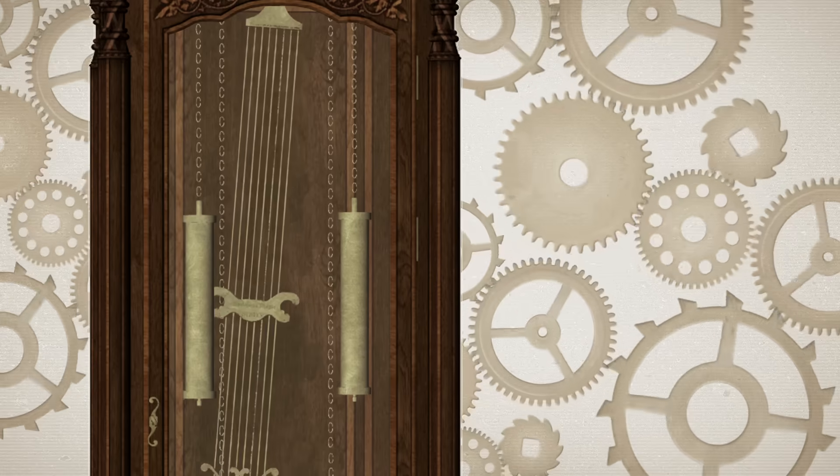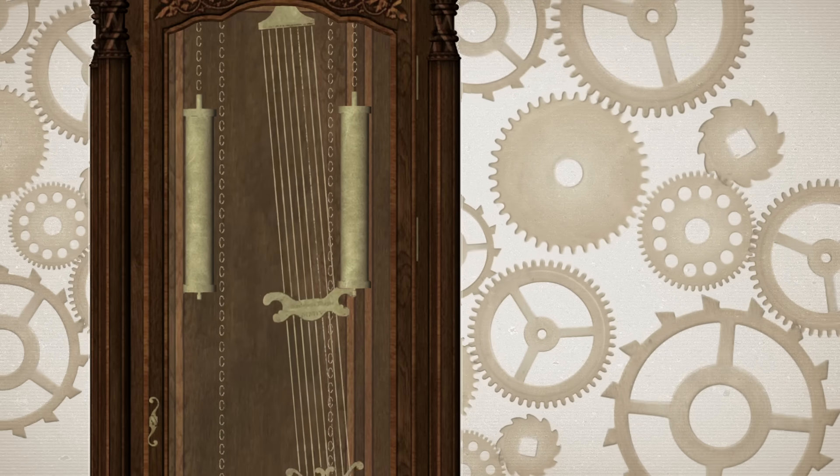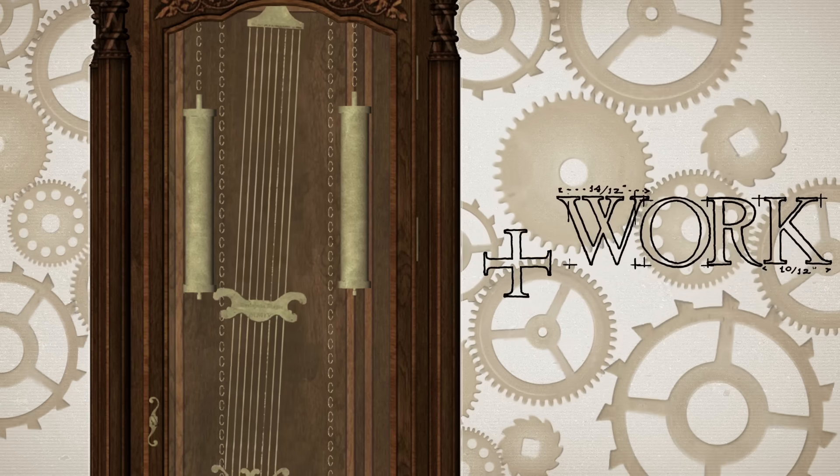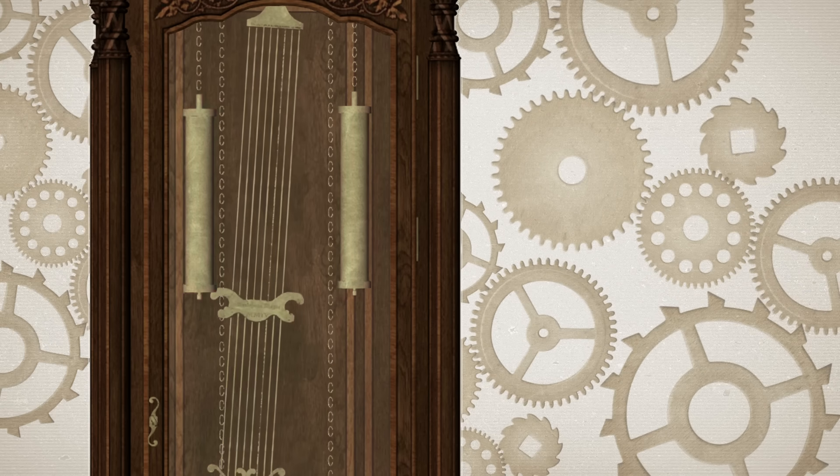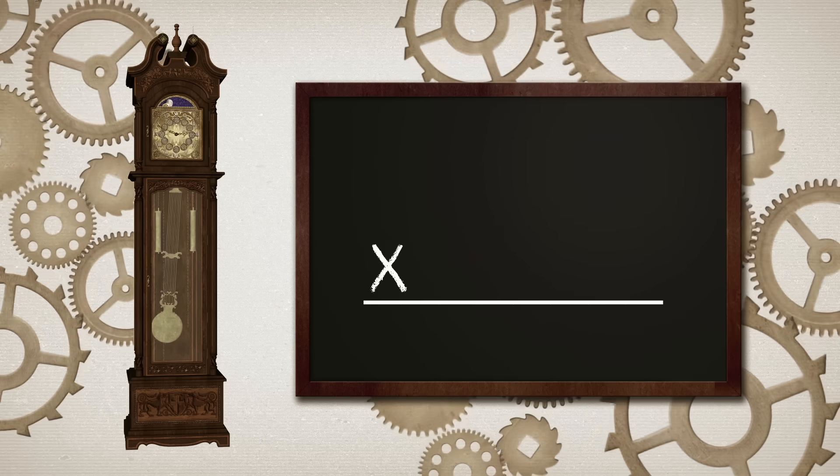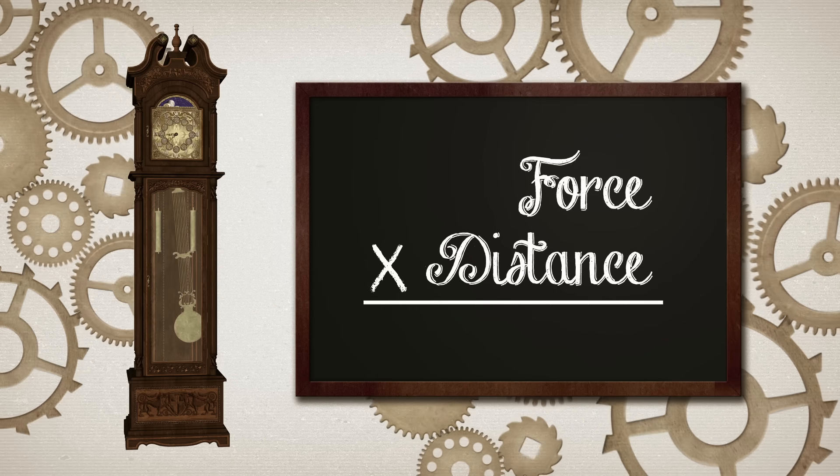We transfer energy into the clock when we turn the crank to raise the heavy metal cylinders inside the clock. When we do this, we're doing positive work, adding energy to the clock, and that energy is stored as gravitational potential energy. We can calculate the amount of work done by multiplying the force we apply times the distance over which we apply the force.